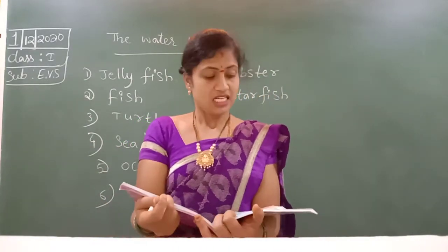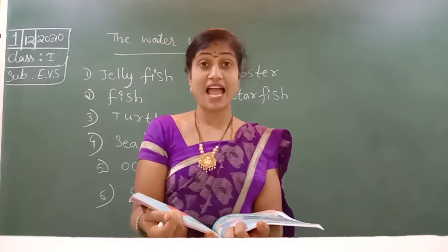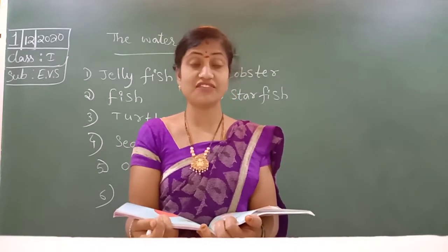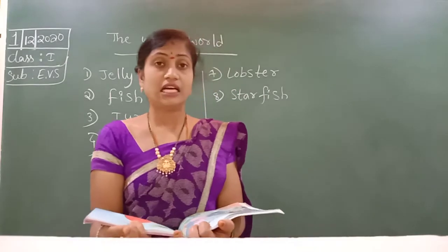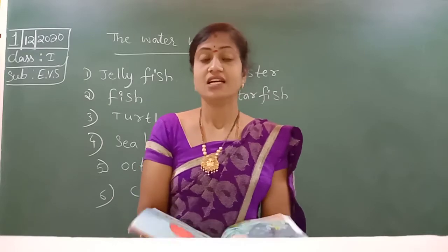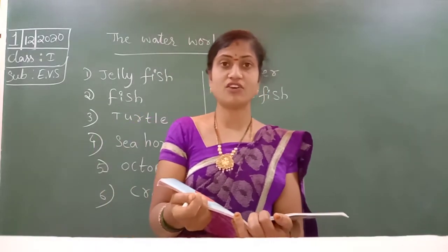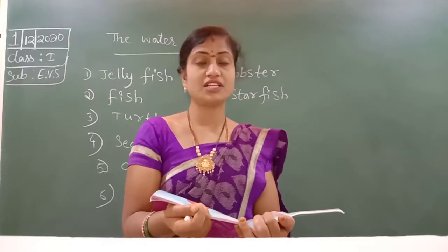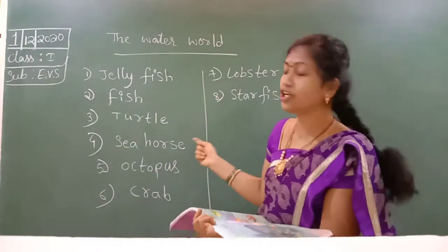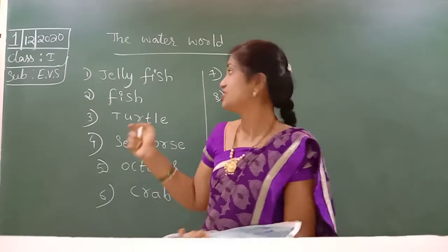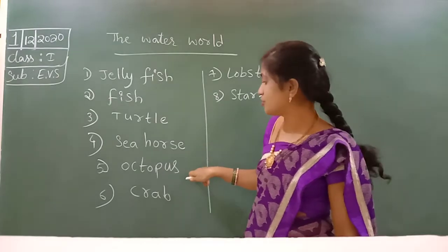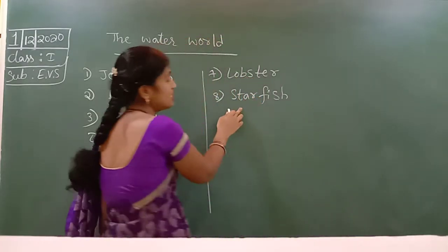In this sea, different animals are there. This is the water world. Water animals — really, have you seen which animals? If you are interested, if you are going to any water place like rivers, seas, or beach or any water space, you have to find out those special animals. It's very important to learn these spellings. Jellyfish, fish, turtles, sea hearts, octopus, crab, lobster, starfish. Just you have to learn the names.